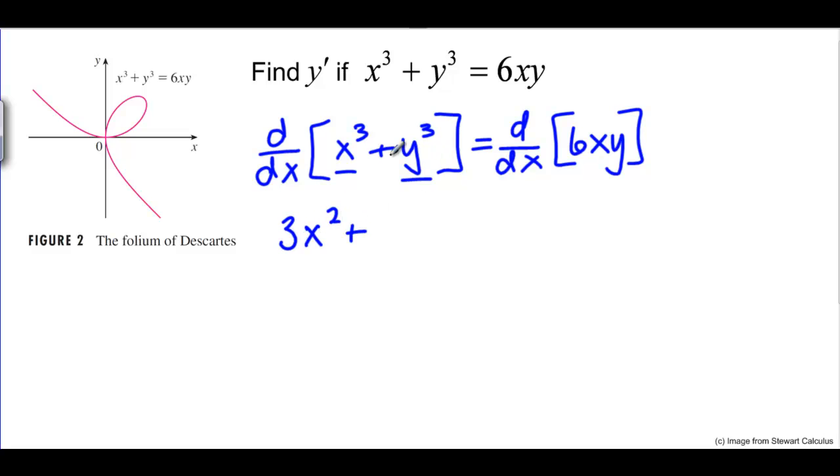When we go to take the derivative of y cubed, we need to use the chain rule because we're going to think of y as depending on x. Y here is like our inside function. We're going to have 3y squared, that's the derivative of the outside with the inside plugged in, times the derivative of the inside here, the derivative of y with respect to x.